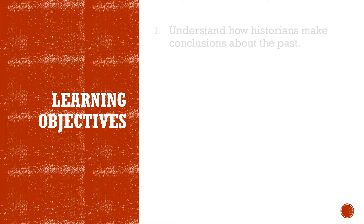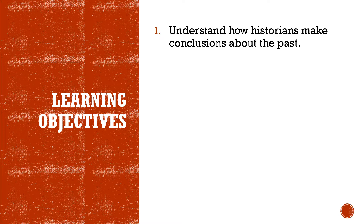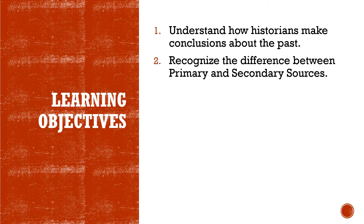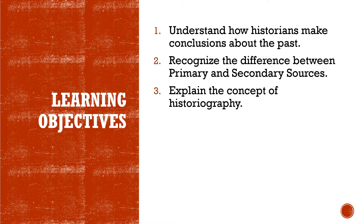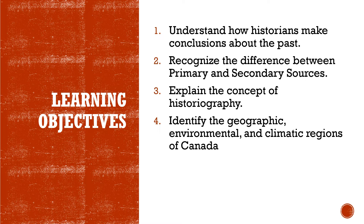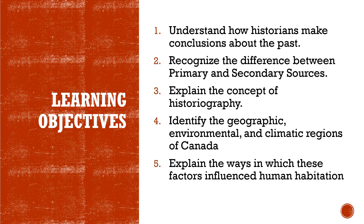The learning objectives for this unit are: number one, understand how historians make conclusions about the past; number two, recognize the difference between primary and secondary sources; number three, explain the concept of historiography; number four, identify the geographic, environmental, and climatic regions of Canada; and finally, number five, explain the ways in which these factors have influenced human habitation.